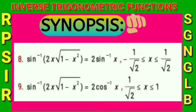Point 8: sin⁻¹(2x√(1-x²)) = 2sin⁻¹(x) for -1/√2 ≤ x ≤ 1/√2, and equals 2cos⁻¹(x) for 1/√2 ≤ x ≤ 1.